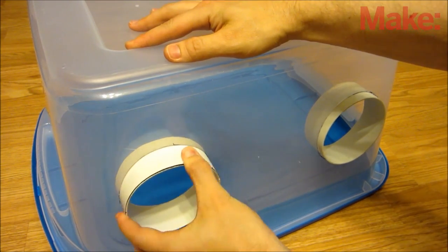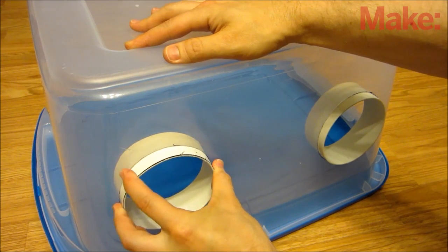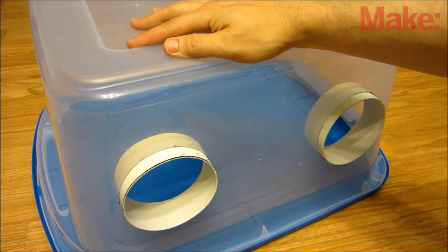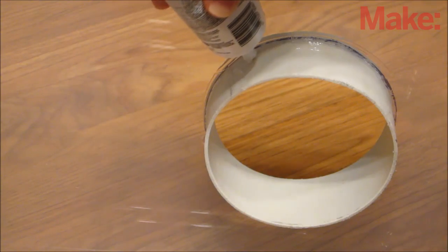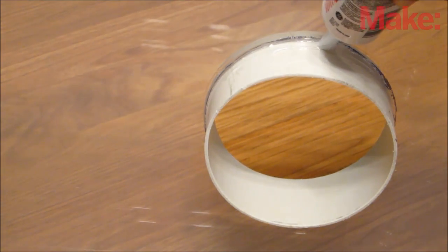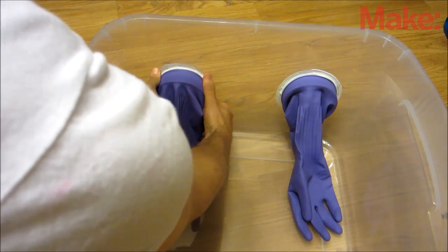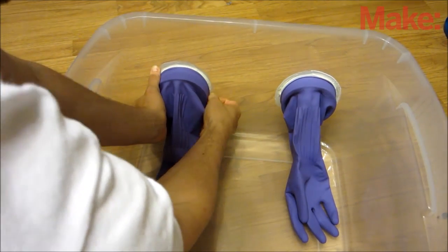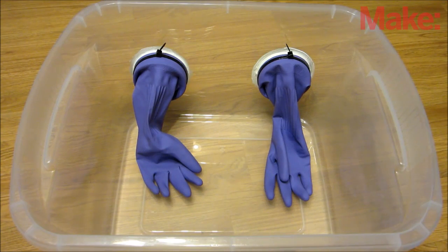Begin by inserting the PVC pipe into the cut holes. Position the pipe so that there's about a half inch of pipe sticking out of the side of the box. Apply the sealant around the edges of the pipe on both sides and let them dry overnight. Then fit the gloves over the PVC pipe on the inside of the box. Lastly, secure the gloves to the PVC pipe.